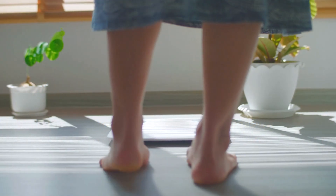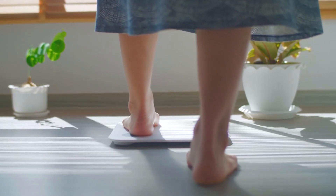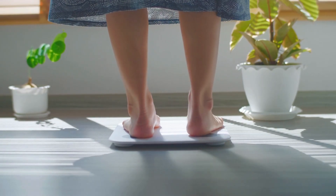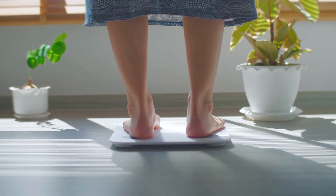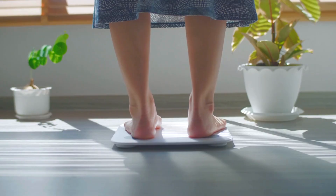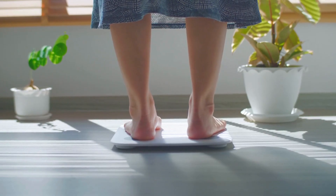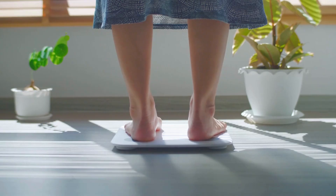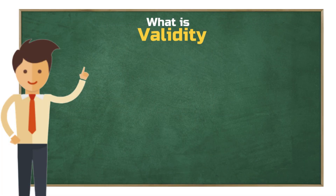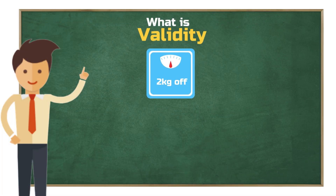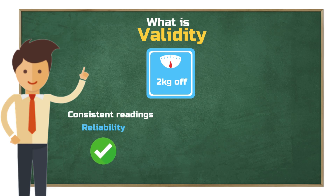Imagine you step on the scale every morning to check your body weight. However, the scale is off by two kilograms every time — maybe it wasn't calibrated properly, or there's a defect in the sensor. Either way, the numbers aren't accurate. It provides consistent readings, so it's reliable. But because it doesn't show your true weight, it lacks validity.